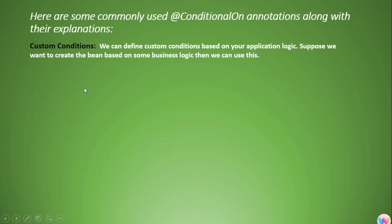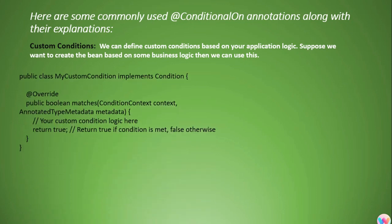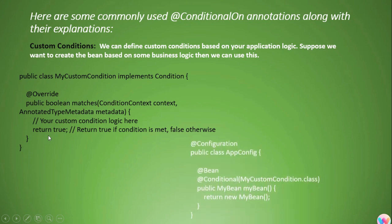Next are custom conditions. Suppose you are working on an application and based on business logic you want to create a bean only if that logic is satisfied. You can implement the Condition interface in a class called MyCustomCondition, which has a matches() method accepting a ConditionContext and AnnotatedTypeMetadata. Inside this method, you put your custom business logic and return true or false. Using @Conditional(MyCustomCondition.class), if matches() returns true, MyBean will be created; if false, it will not be created.